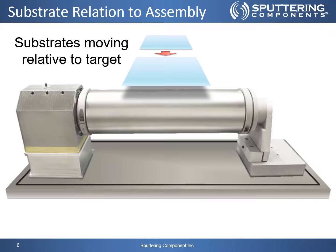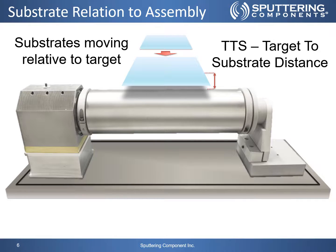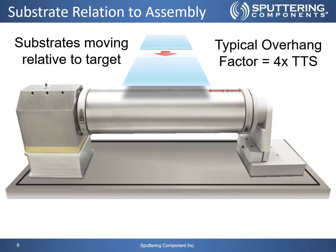The distance between the target tube and the substrate surface is a critical process parameter that limits the coating uniformity. This distance is known as the TTS, or target-to-substrate distance. The TTS — shown as the vertical line to the right of the substrate — usually ranges from 50 to 200 millimeters, and the uniformity achieved is a function of the substrate size and the target tube length. For typical applications, we can take the substrate size and add four times the TTS to get the approximate length of the target tube.